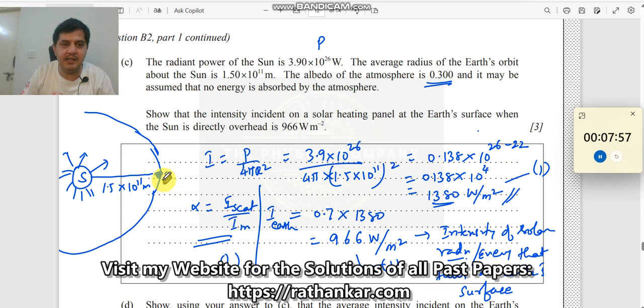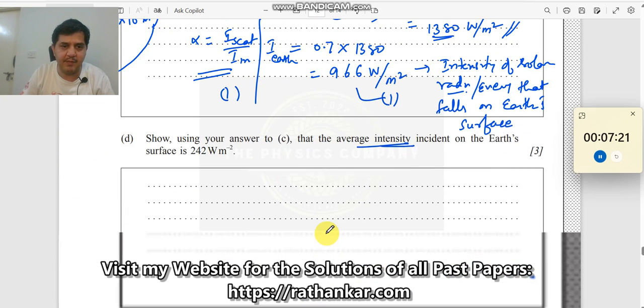We had the sun here and the planet earth over here and the sun was radiating energy in all over the points. We found out the average intensity falling on the earth's orbit. When the radiation enters the earth's atmosphere, part of it is getting reflected and some are getting absorbed. We learned about albedo - 30 percent gets reflected or scattered and 70 percent enters. We found the intensity of radiation that falls on the solar panel which is 966 watt per square meter.